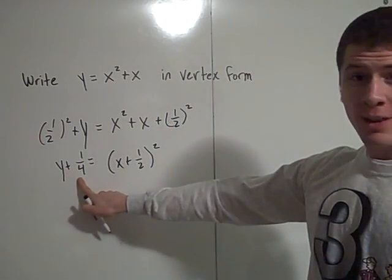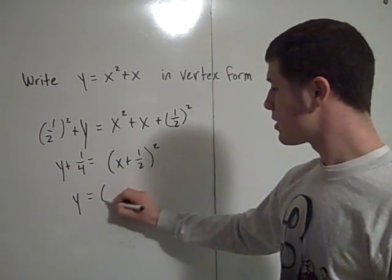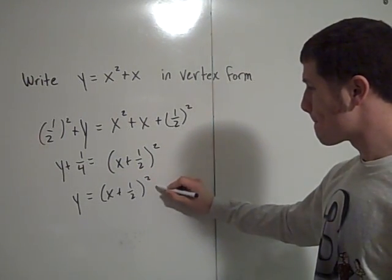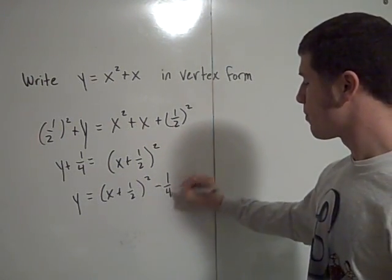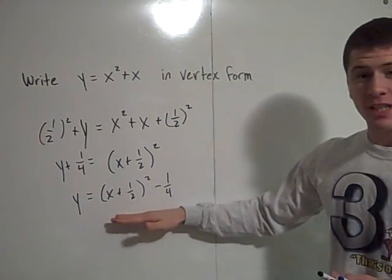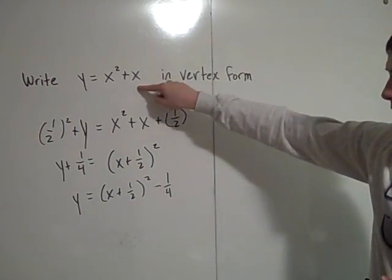Now, subtract the 1 fourth from both sides here, so I have y equals x plus 1 half squared minus 1 fourth. So this is in vertex form, and this is the same equation in standard form.